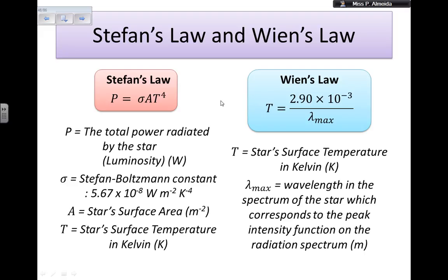So Wien's law says that the temperature, the star's surface temperature in kelvin, is equal to 2.90 times 10 to the power of minus 3, and if I use 10 to the power of minus 3, that constant, I get lambda maximum, so the maximum wavelength, so the peak wavelength comes in meters.